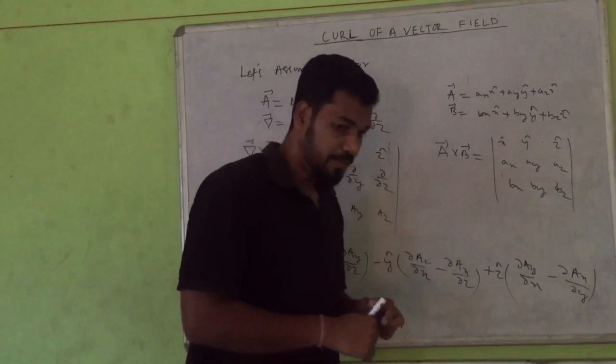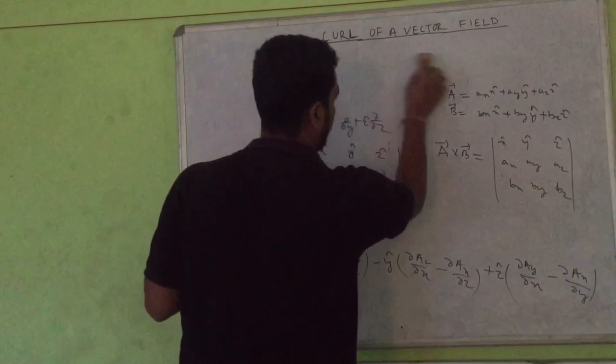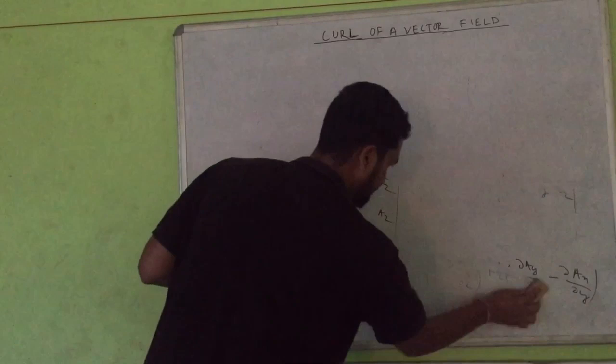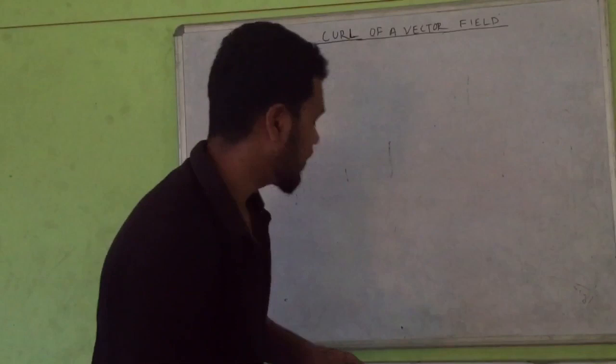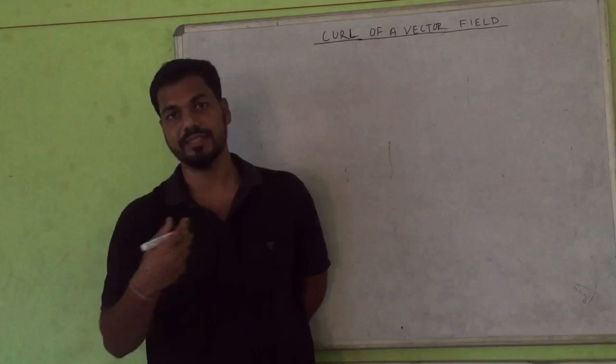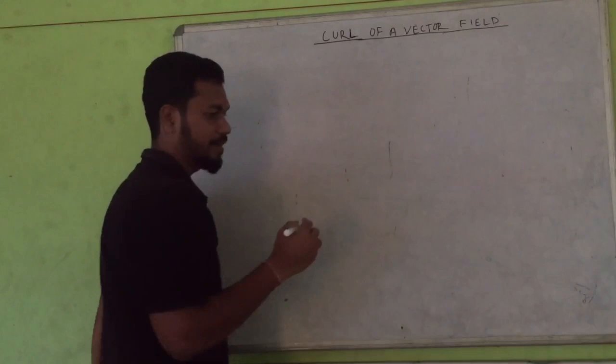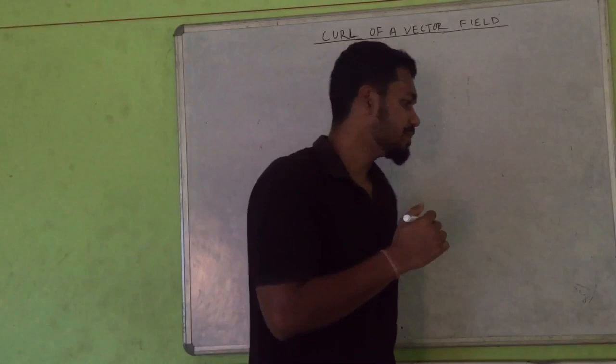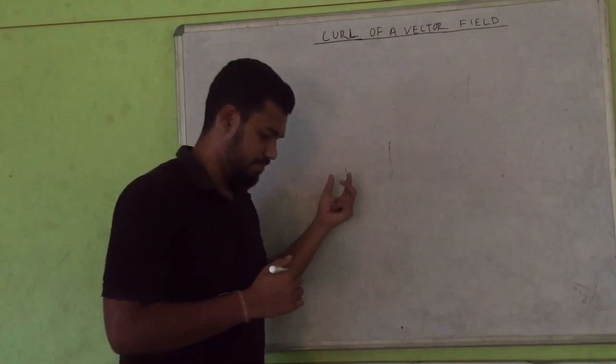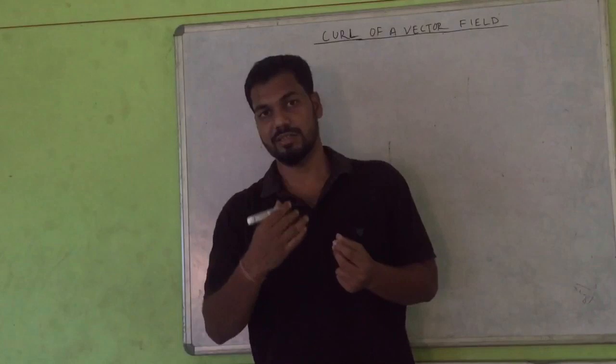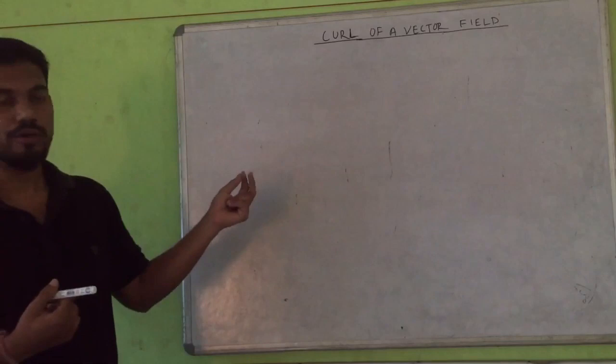Let's see what curl signifies physically. Curl basically denotes how a vector rotates around a given point. In a field, a vector may rotate about a particular point. We can calculate for such vectors — there are vectors for which we can identify a given point where the vector field rotates. Whether a vector is rotational or irrotational, we can easily find out by calculating the curl of that vector field.